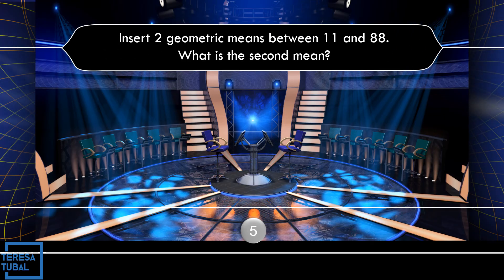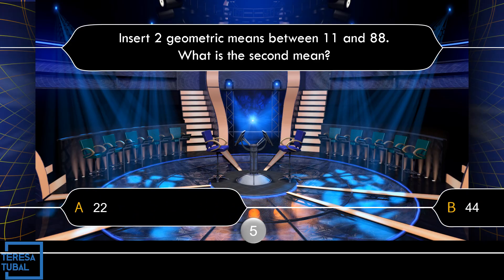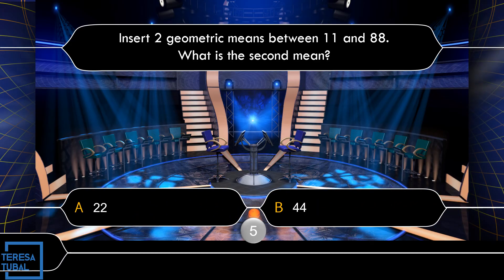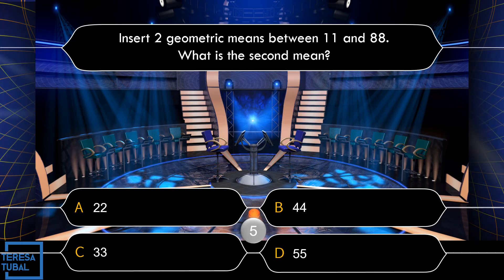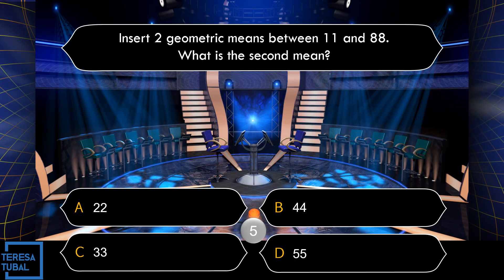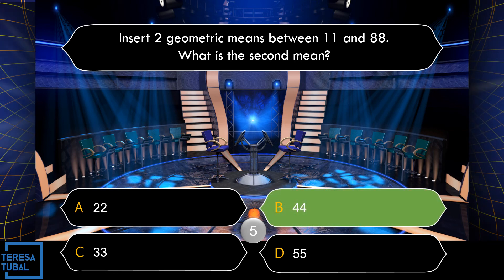Question number 5: Insert 2 geometric means between 11 and 88. What is the second mean? A: 22. B: 44. C: 33. D: 55. Correct! The answer is equal to 44.